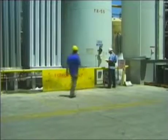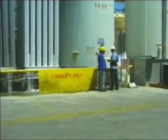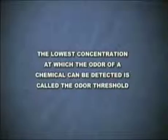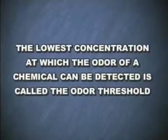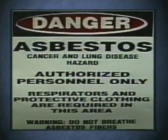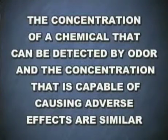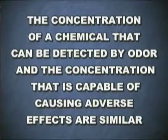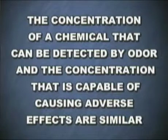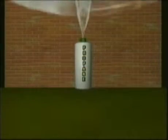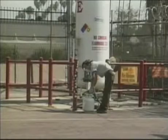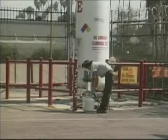Caution should be used in relying on odor alone as a warning of potentially hazardous exposure. Some chemicals have characteristics that can be perceived by workers and serve as a warning of the chemical's presence. The lowest concentration at which the odor of a chemical can be detected is called the odor threshold. Some substances such as asbestos have no odor and therefore provide no warning of their presence. Some chemicals and gases — specifically propane — have no odor, so the manufacturer adds an odor to the gas so it can be smelled, indicating the gas is in the air.